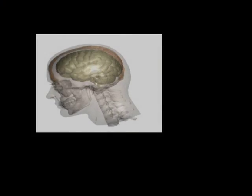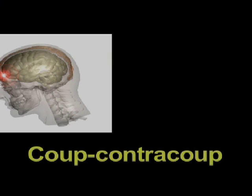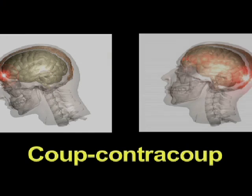Another way you can sustain a brain injury is called a coup-contra-coup injury. This type of injury frequently occurs in a car accident. When you stop suddenly, you are usually thrown forward, your head can hit the dashboard, and you would typically think this is where the injury occurs — and there is damage to the brain at that point.